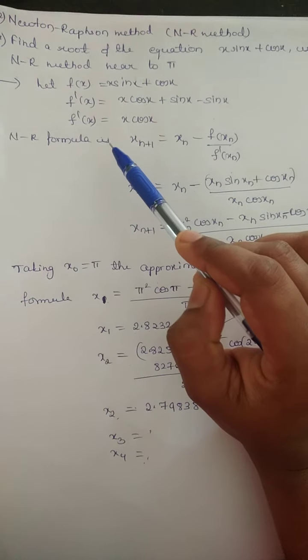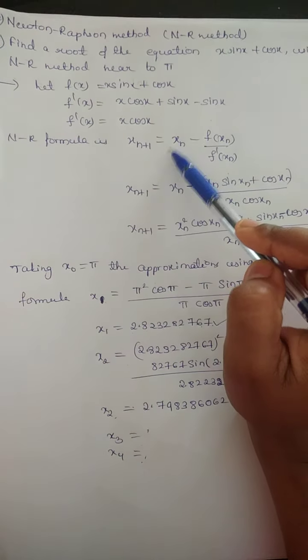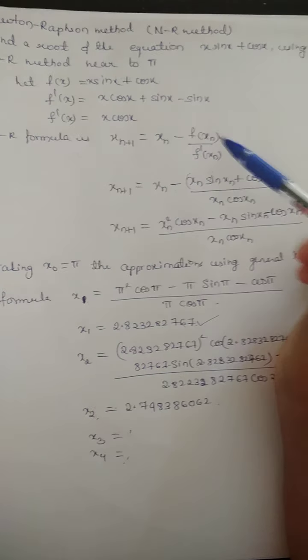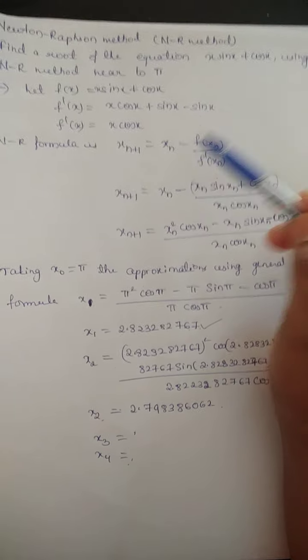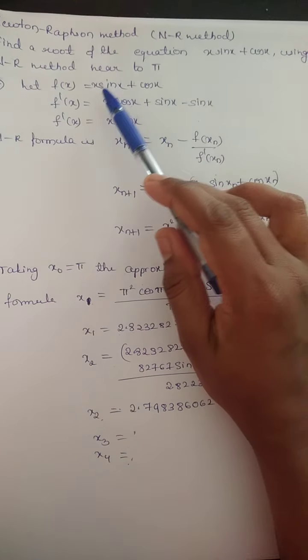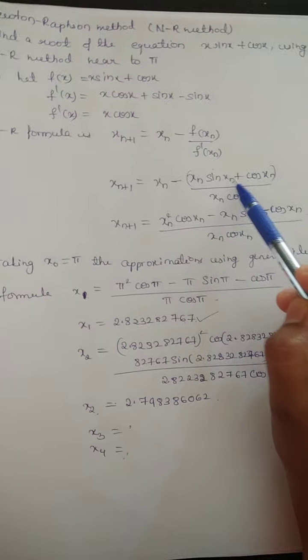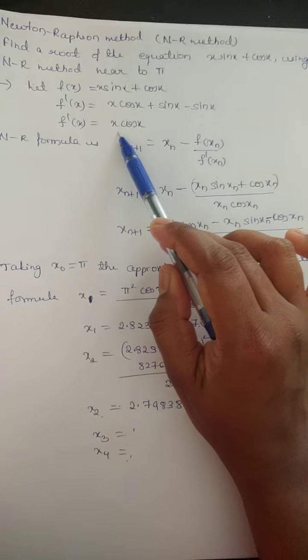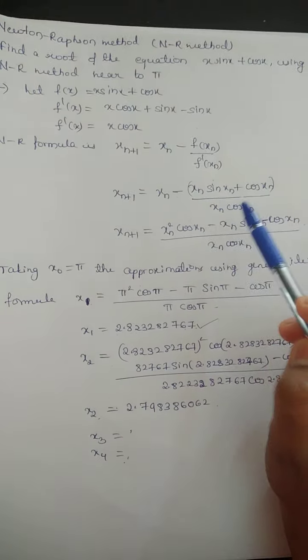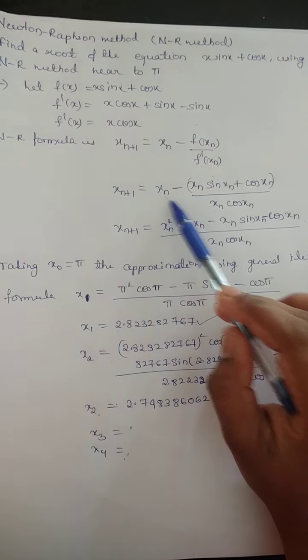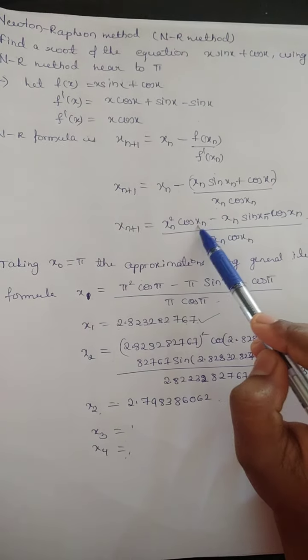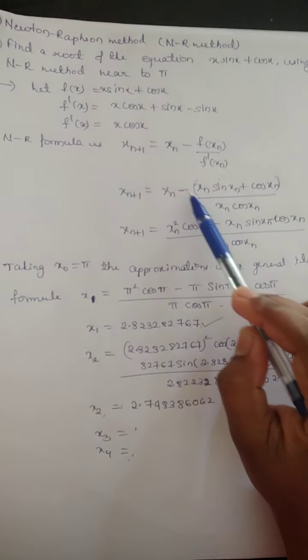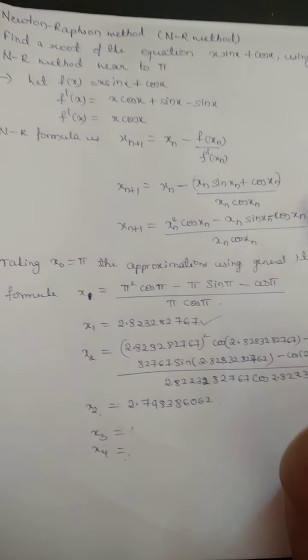Now use the NR formula: x_(n+1) = x_n - f(x_n)/f'(x_n). Now we have to substitute x_n minus f(x_n), the given function, divided by f'(x_n). Now just cross multiply, we will get x_n² cos x_n minus x_n sin x_n minus cos x_n, divided by x_n cos x_n.